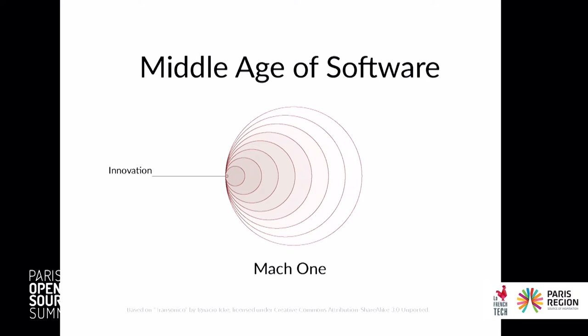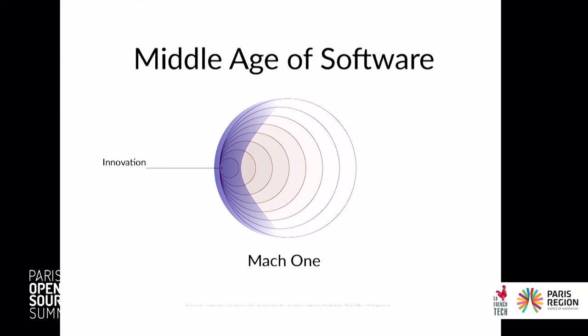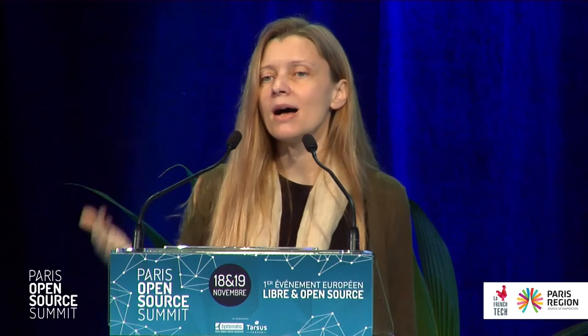The next bit: as you travel faster and an object hits exactly the speed of sound, all those sound waves catch up exactly with the object, making a massively disruptive zone of sound right around it as it travels. This was called the Sound Barrier. And pilots actually died trying to break it — people believed it was impossible to travel faster than the speed of sound.